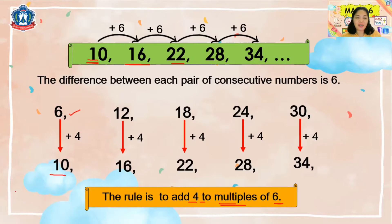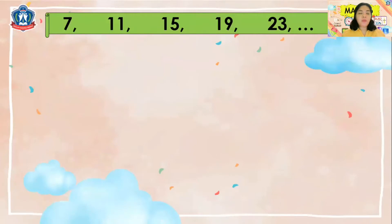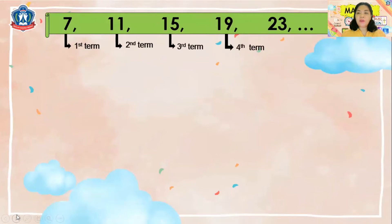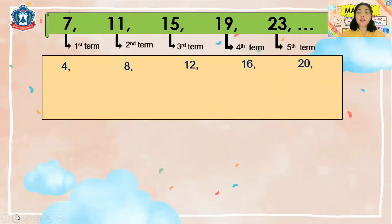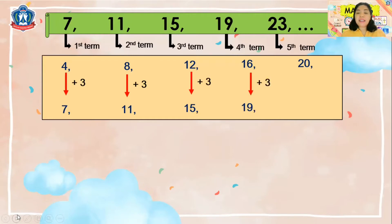Here is another sequence: 7, 11, 15, 19, and 23. Seven is our first term, 11 is the second, 15 is the third, 19 is the fourth, and 23 is the fifth. We can still find further terms. Let's compare this to the multiples of 4. If we add 3 to 4 we get 7 — the same as our first term. 8 plus 3 is 11, 12 plus 3 is 15, 16 plus 3 is 19, and 20 plus 3 is 23. So the rule is: add 3 to the multiples of 4.